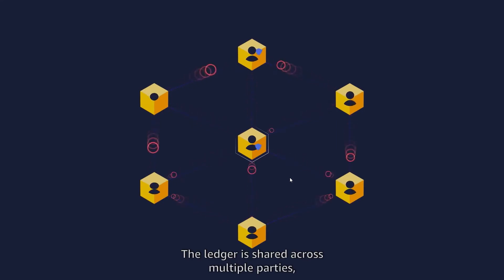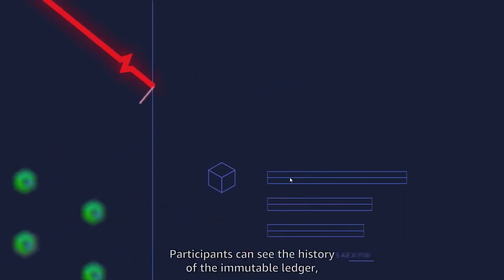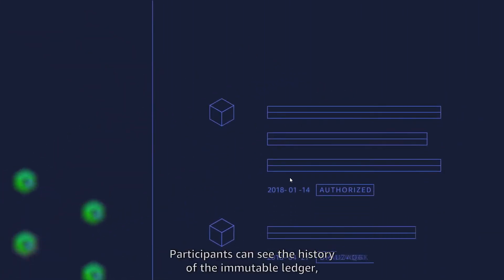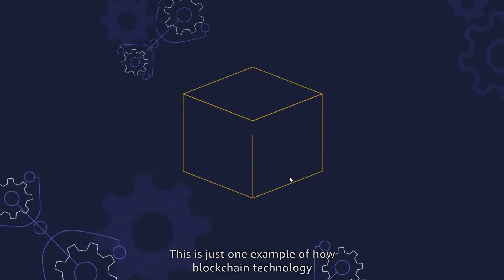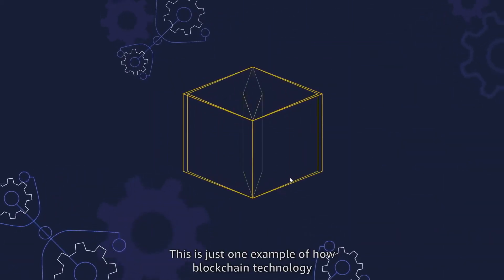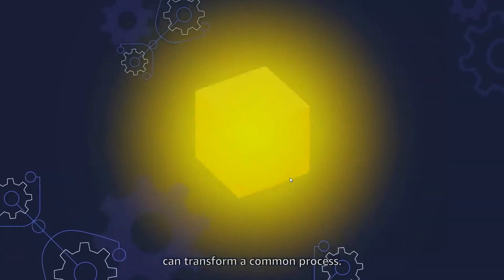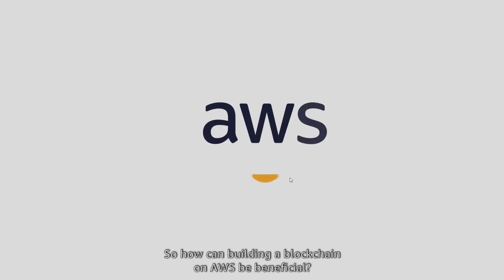The ledger is shared across multiple parties and any changes made must be agreed upon by all participants, who can see the history of the immutable ledger, replacing the traditional need for a trusted third party. This is just one example of how blockchain technology can transform a common process.